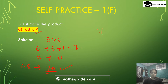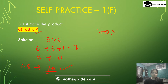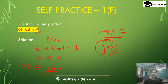Now 70 multiplied by 7. The number 7 is a single digit, so we write it down as it is. Now 70 multiplied by 7 equals 490. So 490 is the answer.